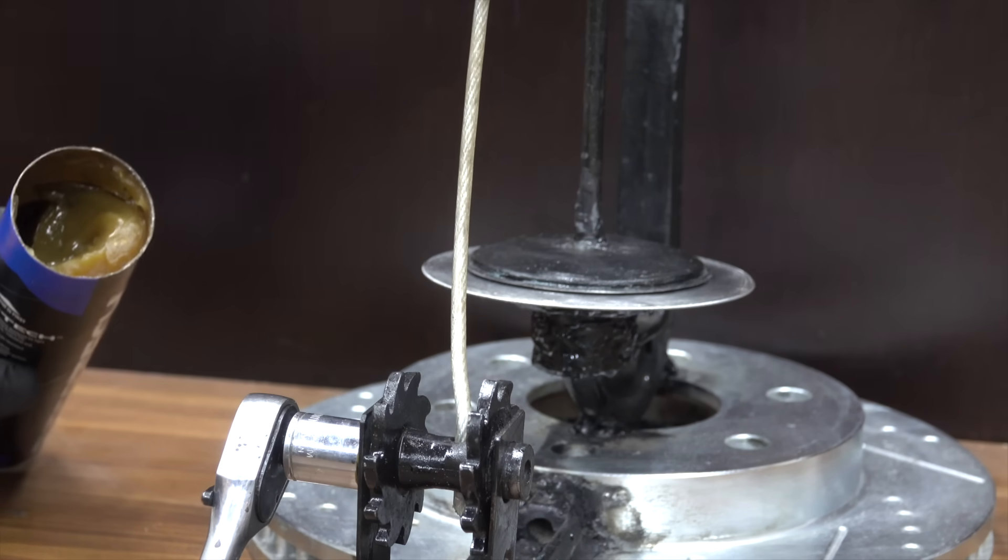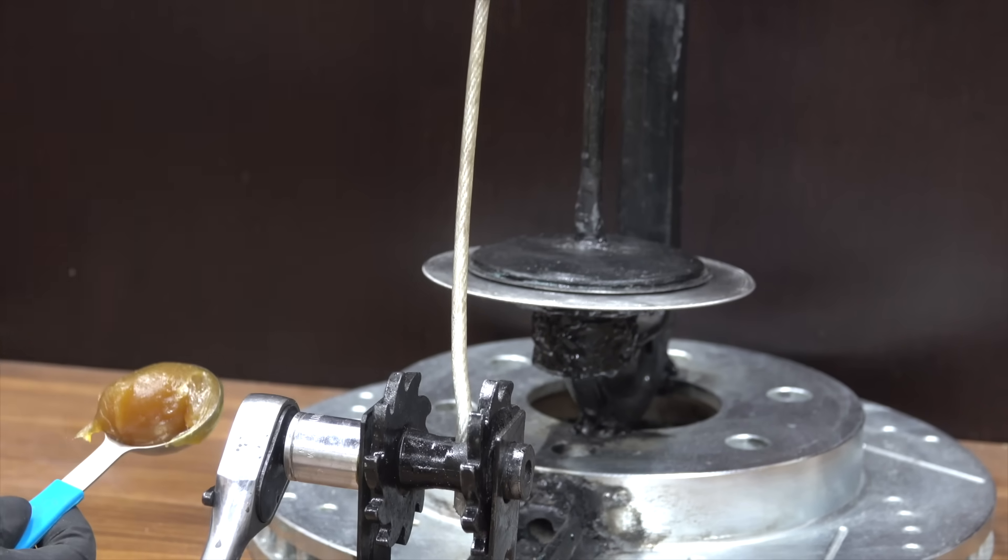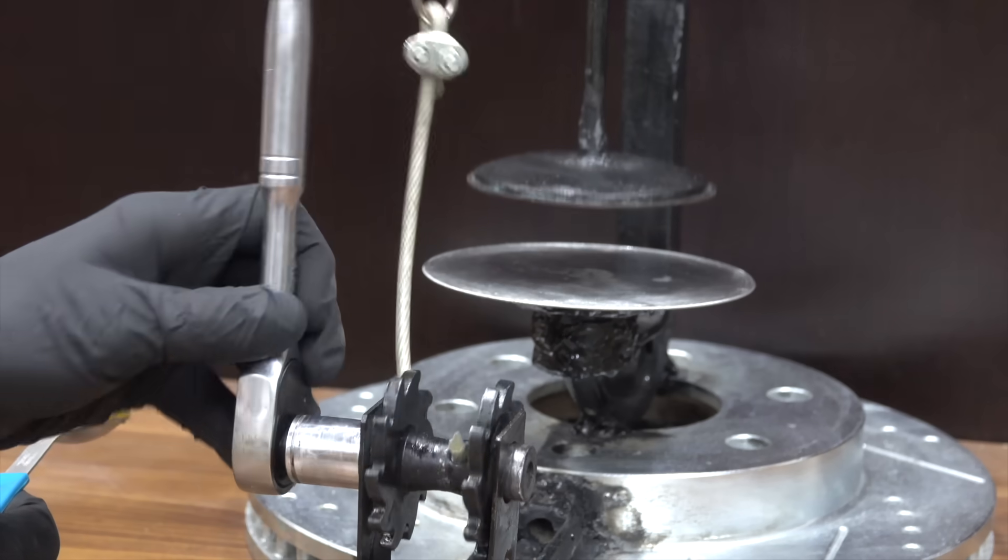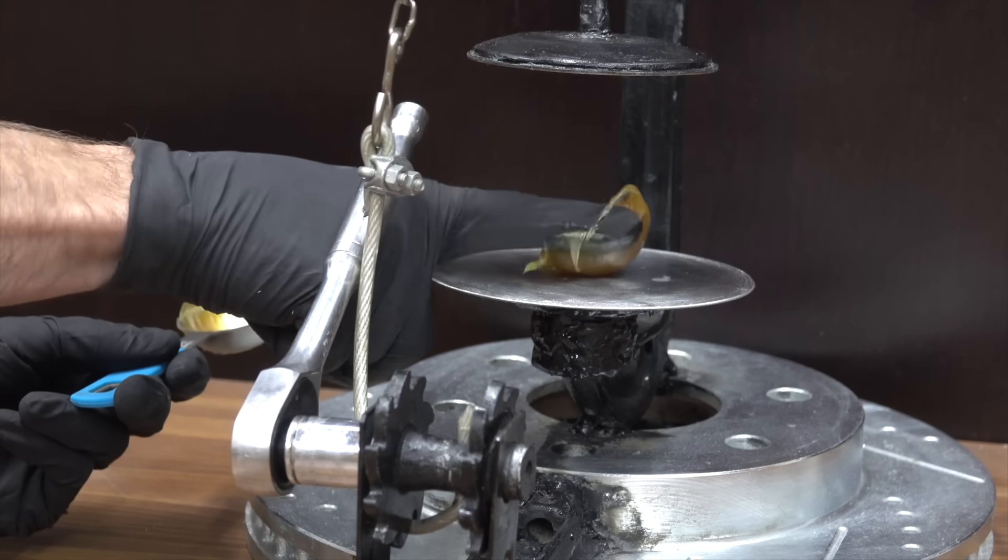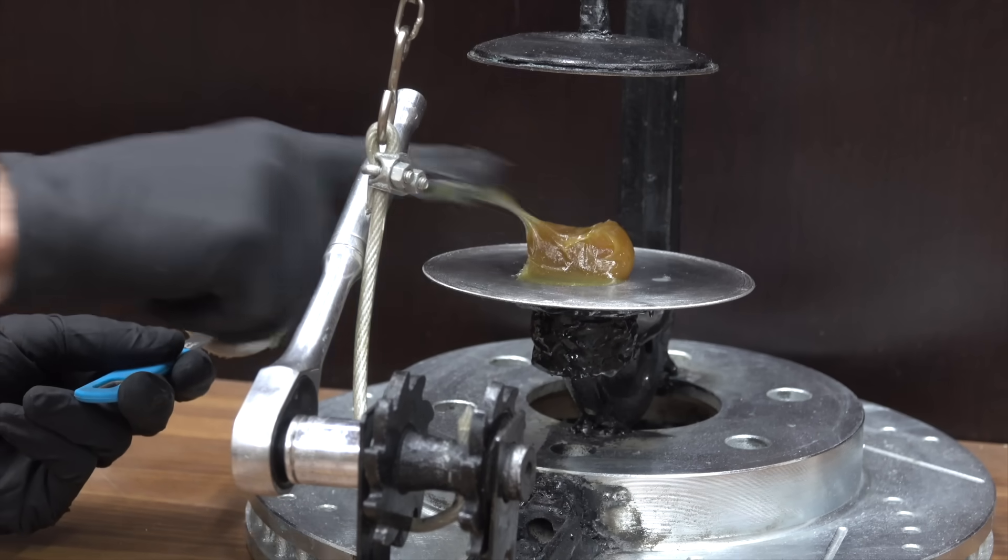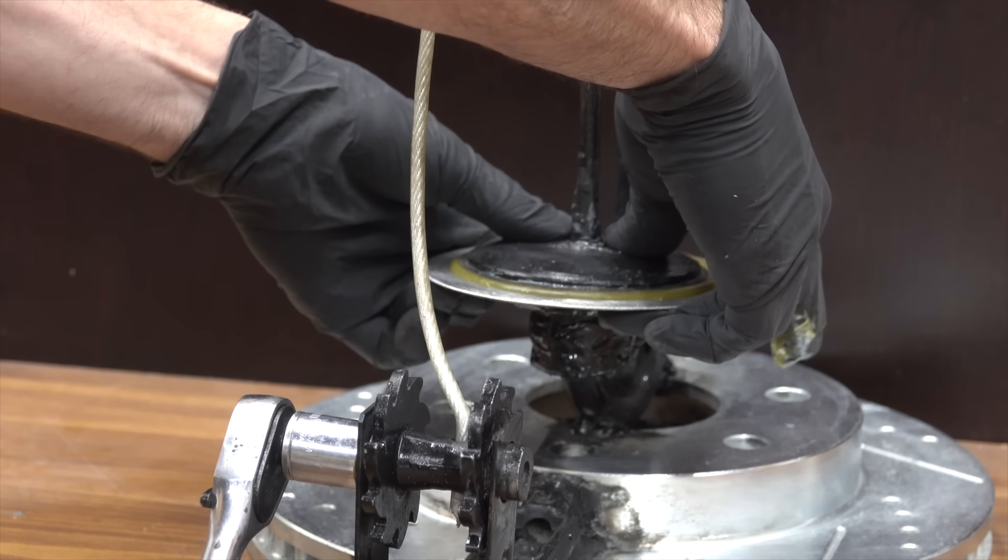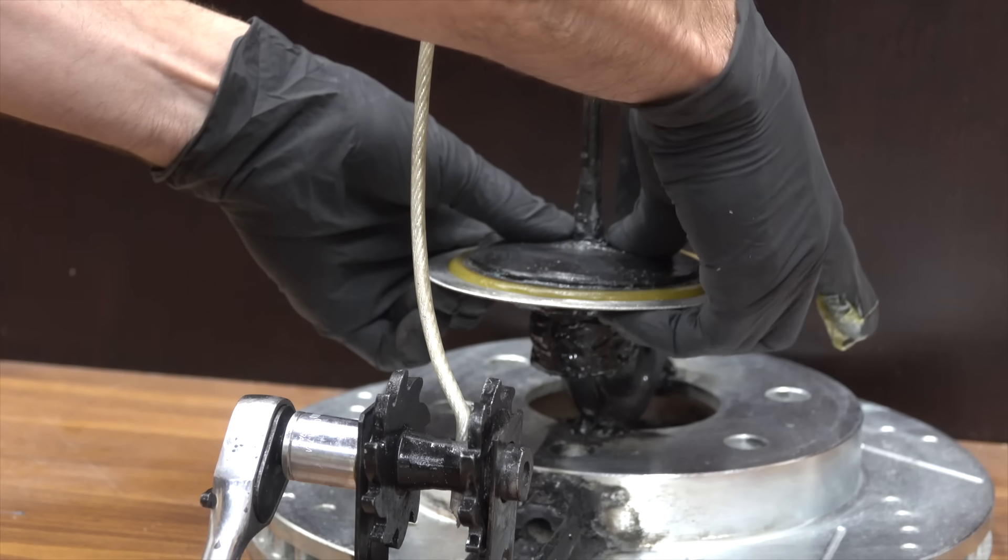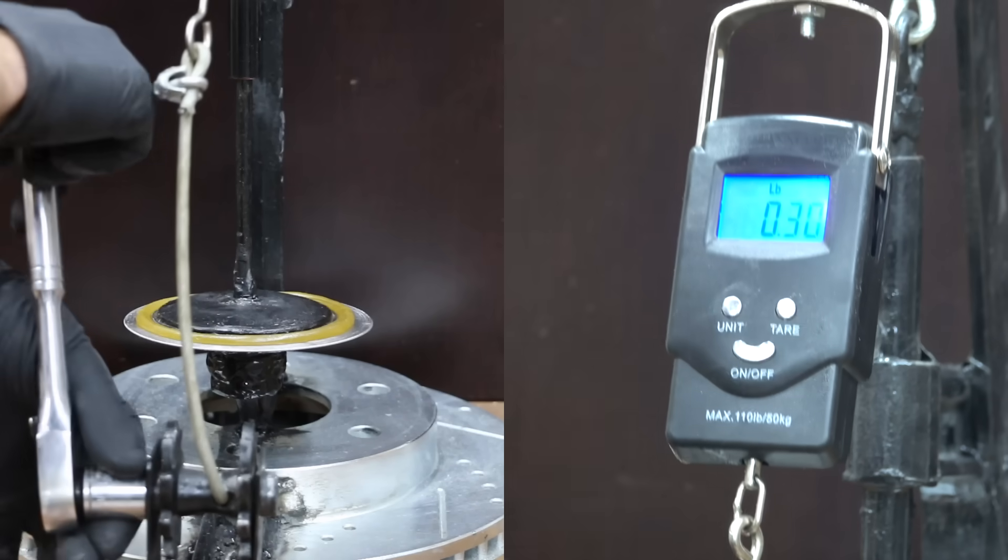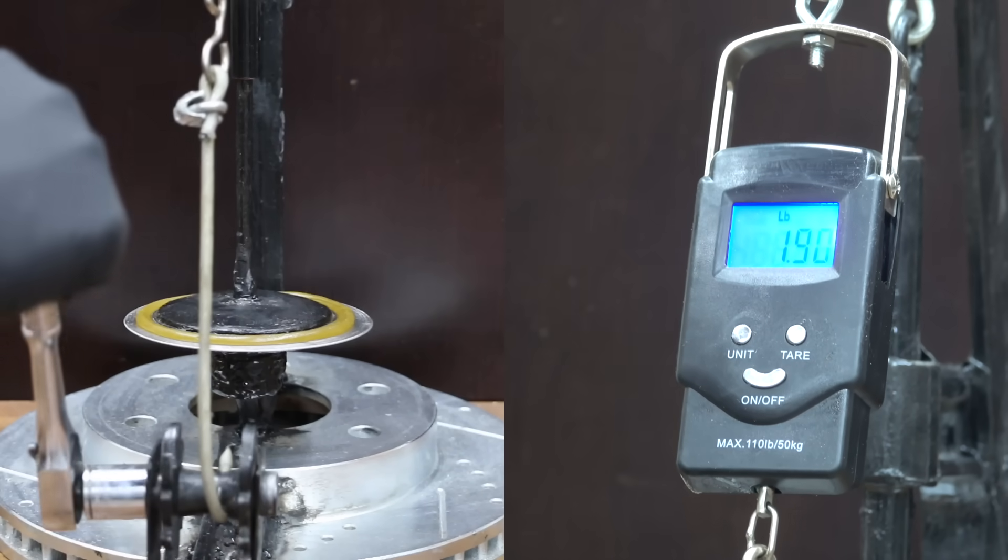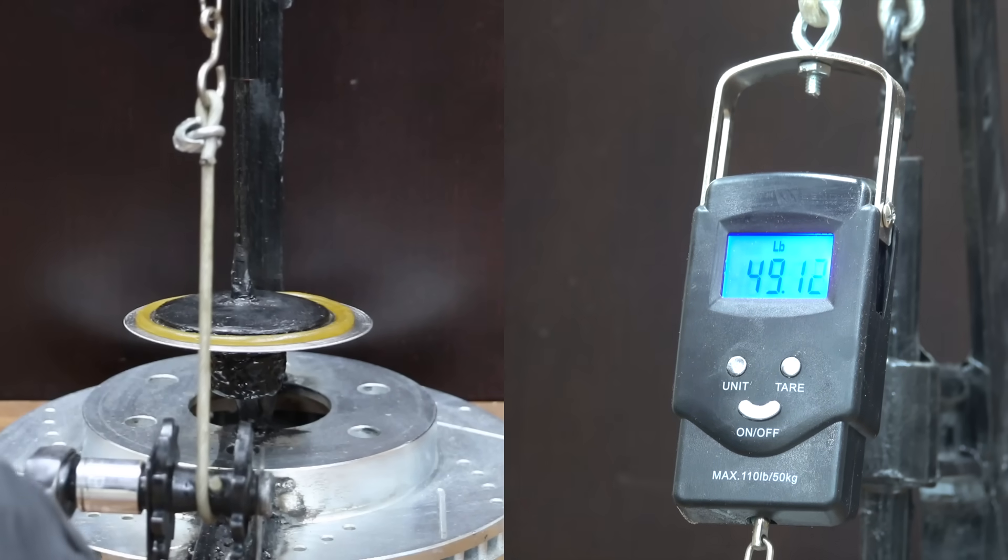I built the next test jig to quantify the cohesive and adhesive properties of grease. The tester will measure the amount of force required to separate the two metal discs that are held together by the grease. I'll first place approximately 25 milliliters of grease on the very center of the bottom disc. The top disc will then be lowered into position and then I'll apply just enough pressure to squeeze out all the air pockets and to form a layer of grease around the entire perimeter of the disc. Finally, I'll apply an upward force using a pulley and lever setup and an inline weight scale to measure the amount of force required to separate the plates.